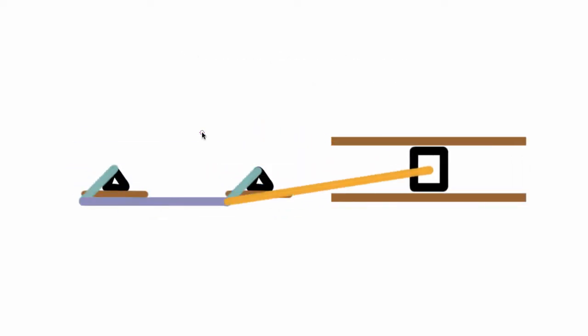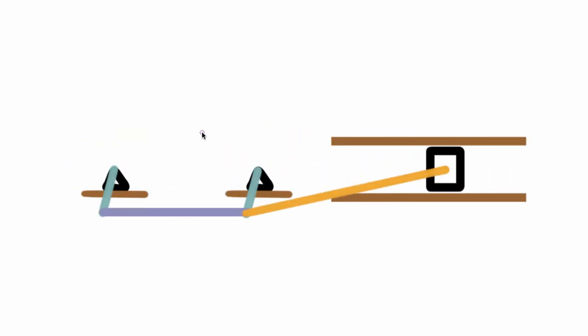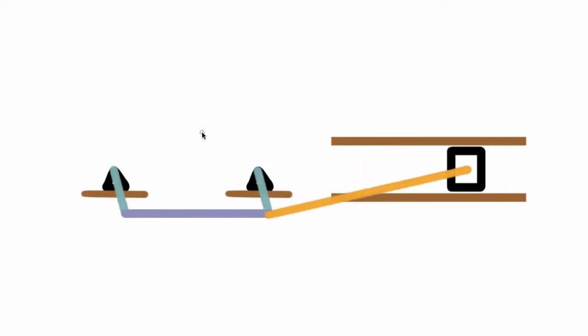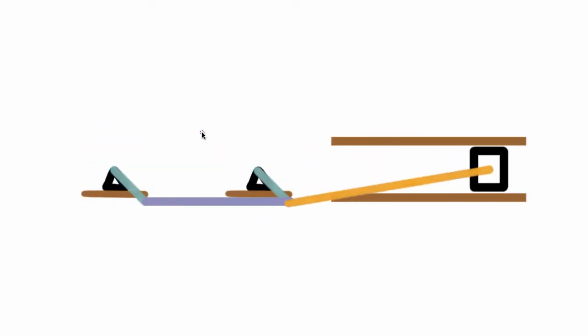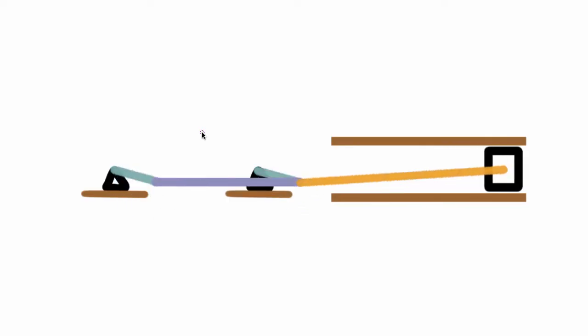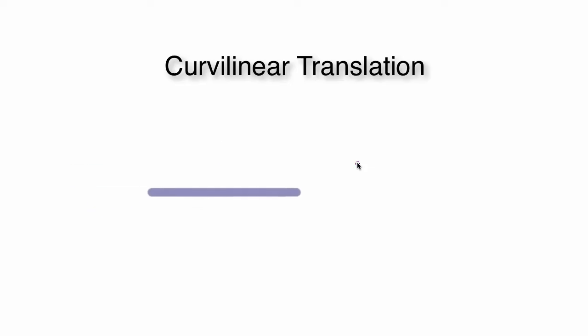If we bring back everything again and focus on this purplish-bluish bar that's staying horizontal, it's actually experiencing curvilinear translation. Let's hide everything else and take a closer look. If you look carefully, the actual member isn't rotating itself.